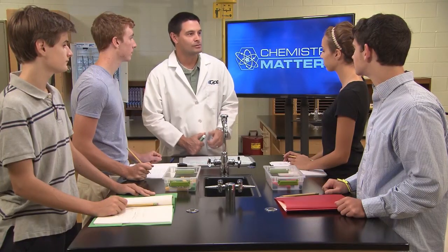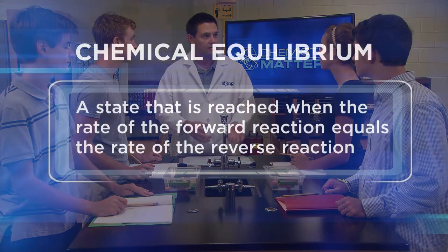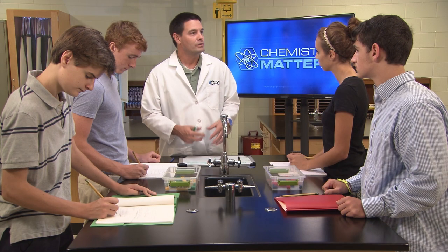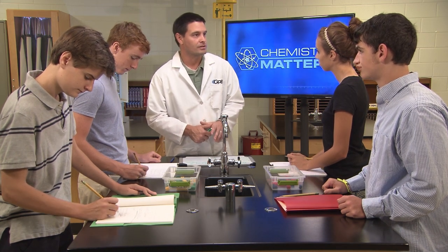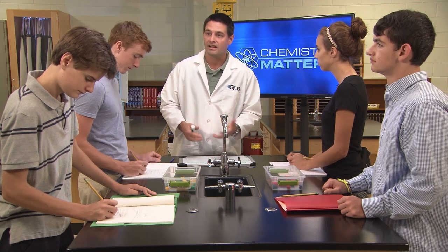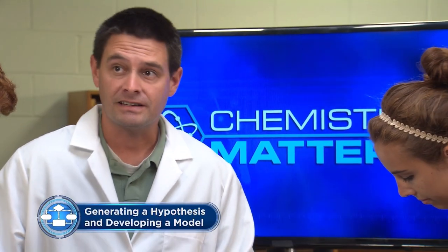Chemists describe equilibrium as a state that's reached when the rate of the forward reaction equals the rate of the reverse reaction. In other words, the rate that products are being created is the same as the rate of the products turning back into reactants. We can tell the reaction has reached equilibrium when the amounts of the reactants and products remain constant, or unchanging.